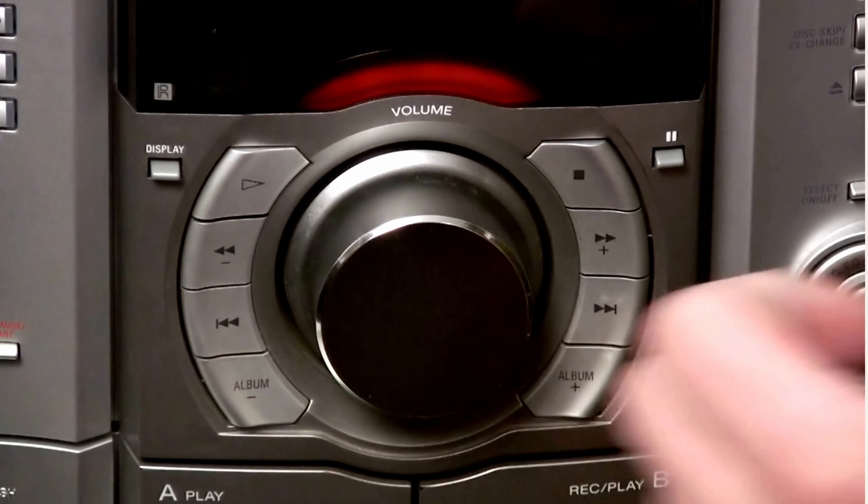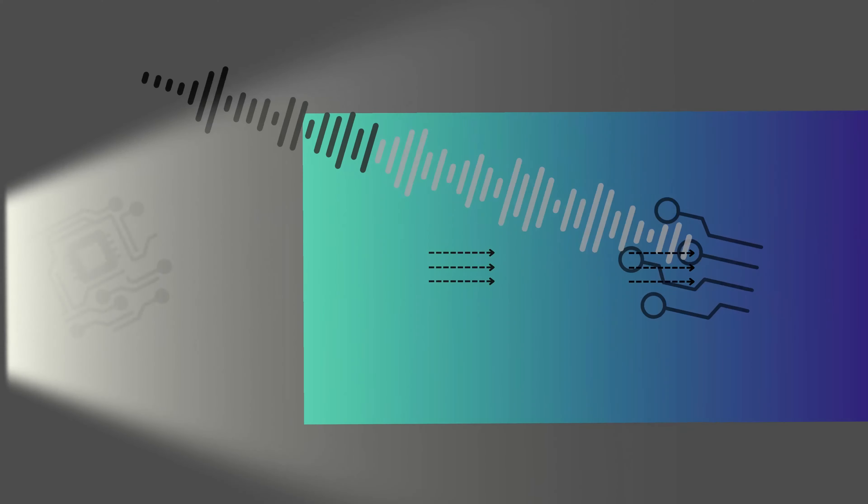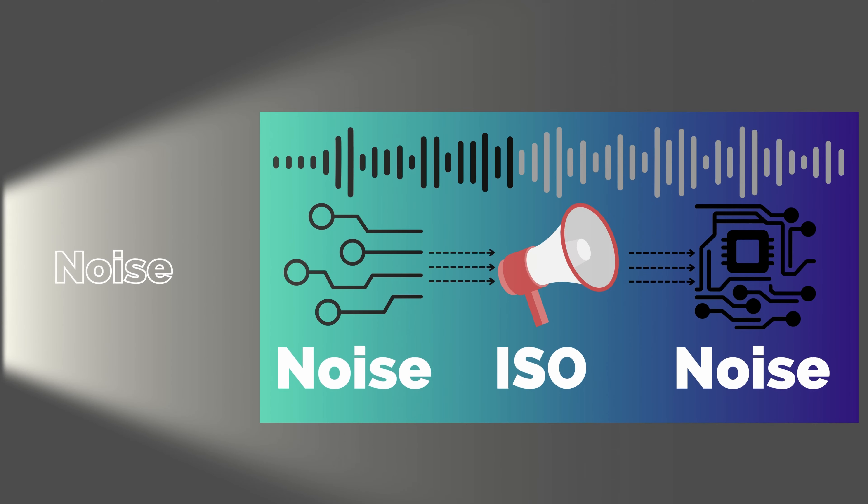I like to think about this like turning the volume knob on a radio when all you hear is noise. Turning the volume up isn't going to make it any clearer — it's just going to raise the noise level more. So when you raise the ISO, sure, you amplify the signal and the light being received, but you also amplify the noise in the electronics before the ISO, as well as any noise from the light source — or lack thereof.